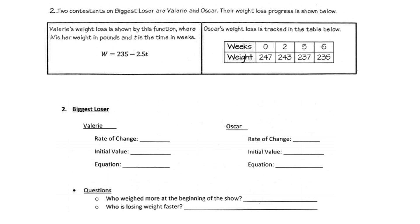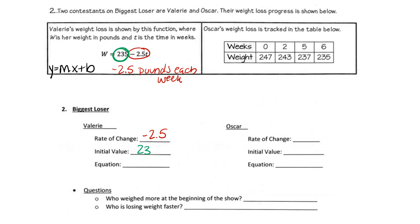Problem two: two contestants on the Biggest Loser are Valerie and Oscar. Valerie's weight loss is shown in a function where w is her weight in pounds and t is time in weeks. Comparing it to y equals mx plus b, the m and x value are always together — that's the negative 2.5. Valerie is losing two and a half pounds per week. Her initial value is her starting point: she started at 235 pounds. We write the equation: y equals negative 2.5x plus 235.